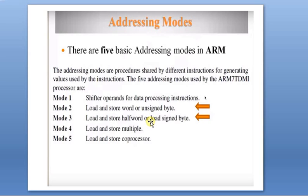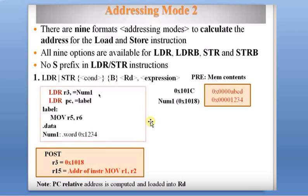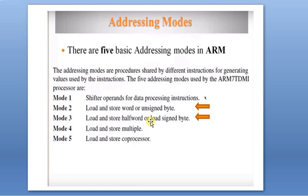For load and store operations in addressing Mode 2, there are nine formats available. Mode 2 performs load and store of a word (32-bit data) or unsigned byte (positive 8-bit value) to and from memory. Mode 3 covers load and store half-word (16-bit) and load signed byte (negative 8-bit value from memory to a register).